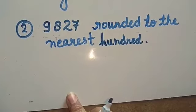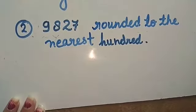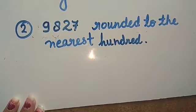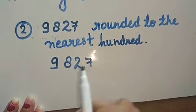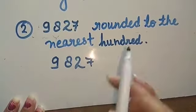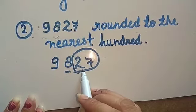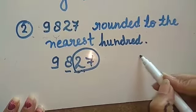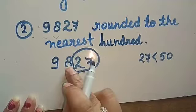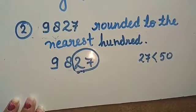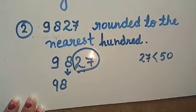Now another example: 9827 rounded to the nearest hundred. First of all, we will check the place — the place is hundreds. We need to round off to the nearest hundred. Again, we check the two-digit number to the right. If this number is less than 50 — here 27 is less than 50 — then the digit in the hundreds place does not change.